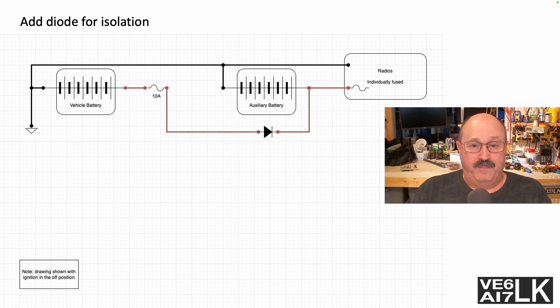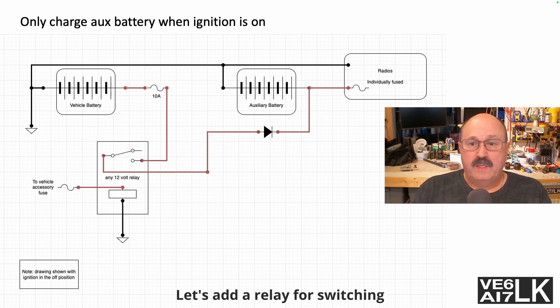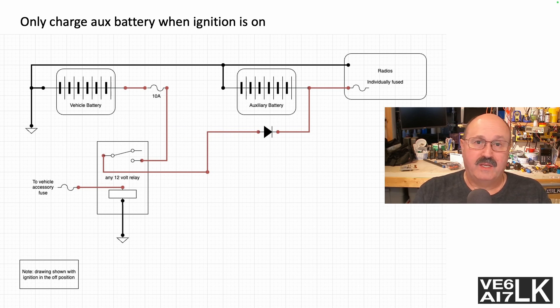All right, so let's add that switching. The switching circuit is simple. All I'm doing is I've added a relay that is triggered by the vehicle's accessory circuit. So if I turn on the accessory, the charging comes on and it starts flowing down to the auxiliary battery.